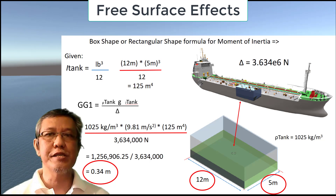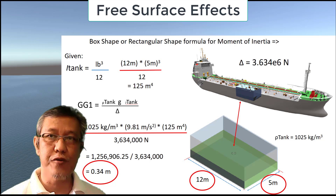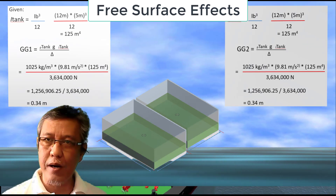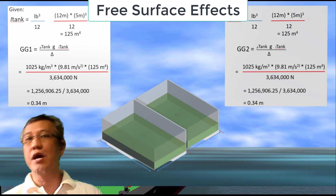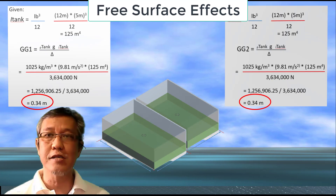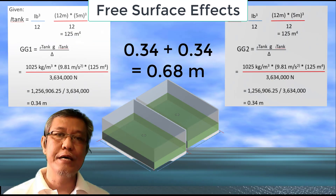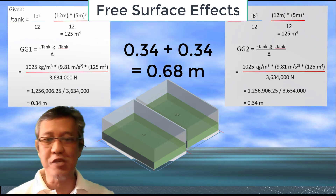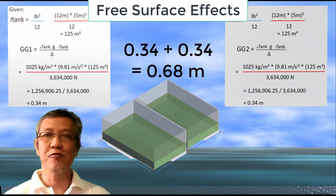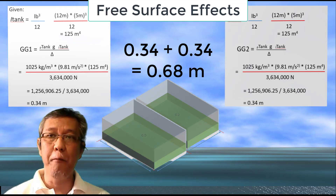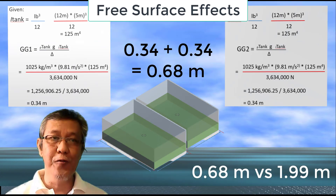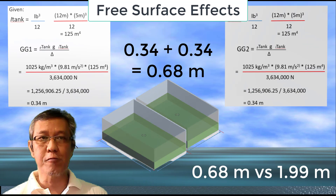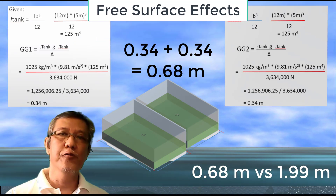Now, if we try to do another computation — let's say this longitudinal position as being shown right now — we double the tanks with the same size and then recalculate again the free surface effect. You can see that we have the same value of 0.34 each. And even if we sum them up together, it's still going to be about 0.68 meters. It's still a far cry compared to the one tank which was placed in a transverse position perpendicular to the longitudinal plane of the vessel, which is 1.99. So we can hereby conclude that dividing a tank into two or even more would reduce significantly the free surface effects.